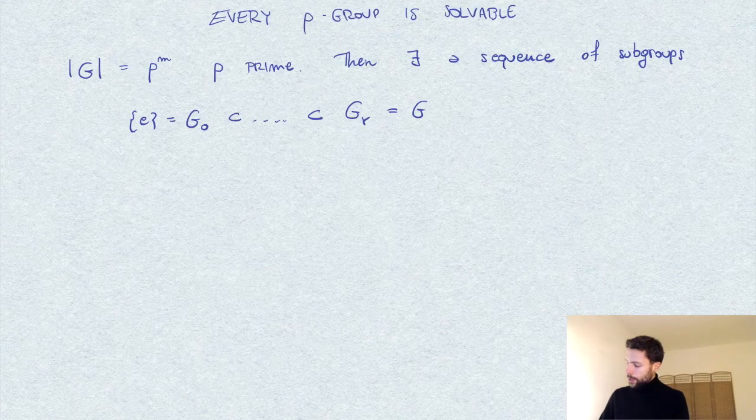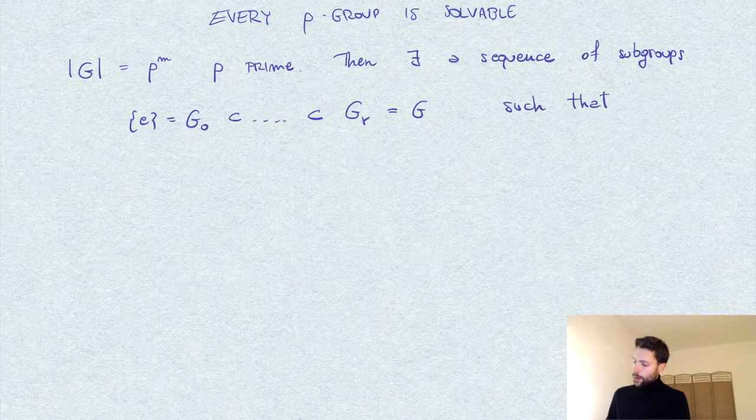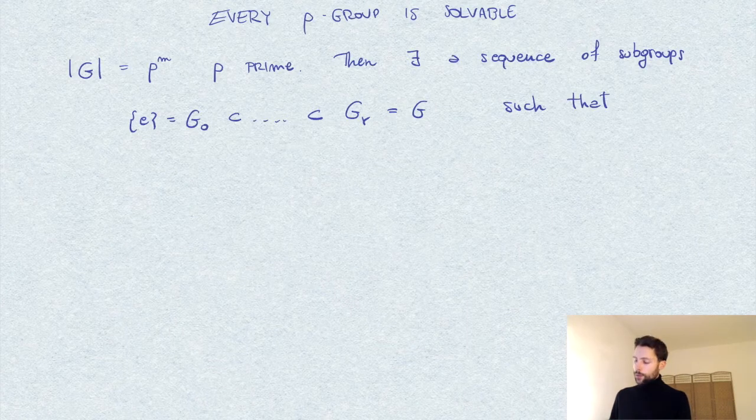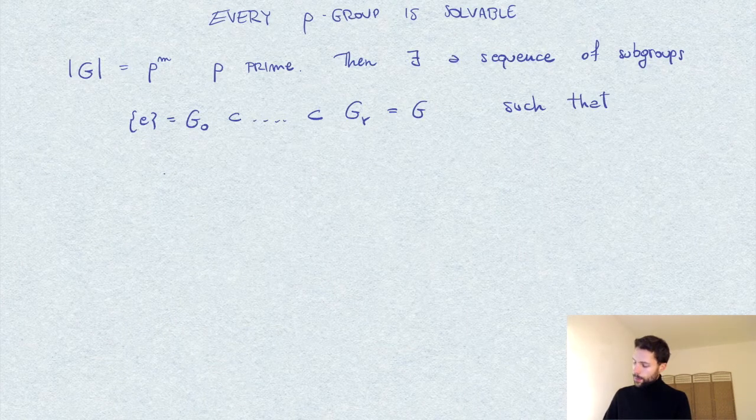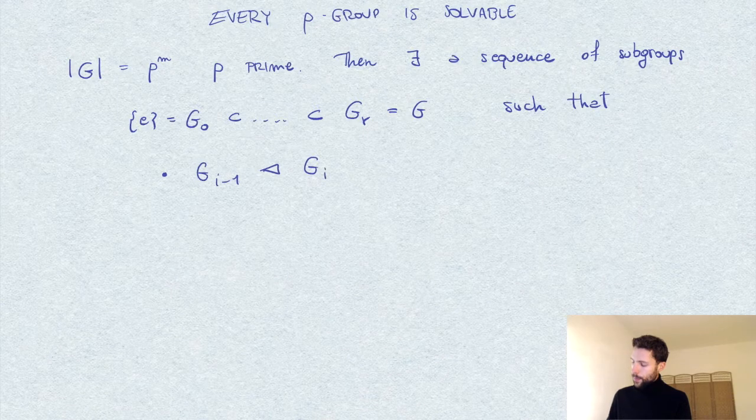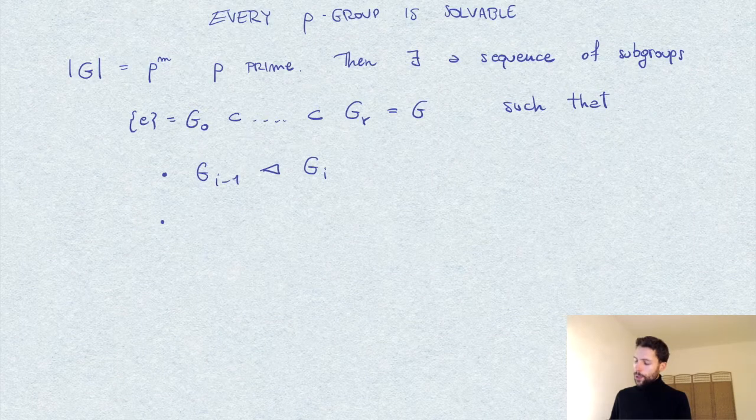And the first G_0 is just the trivial group, with the properties that each of the subgroups is normal relative to the next one. So G_{i-1} is normal inside G_i, and the quotient is always abelian.